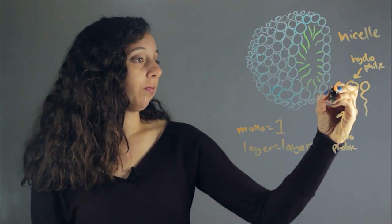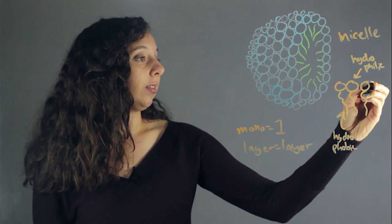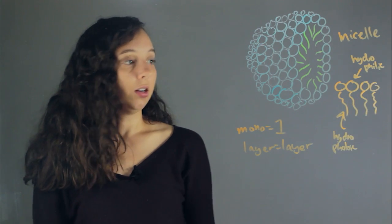So if you get a bunch of them, they're all going to line up just like this. And this is how you create a monolayer.